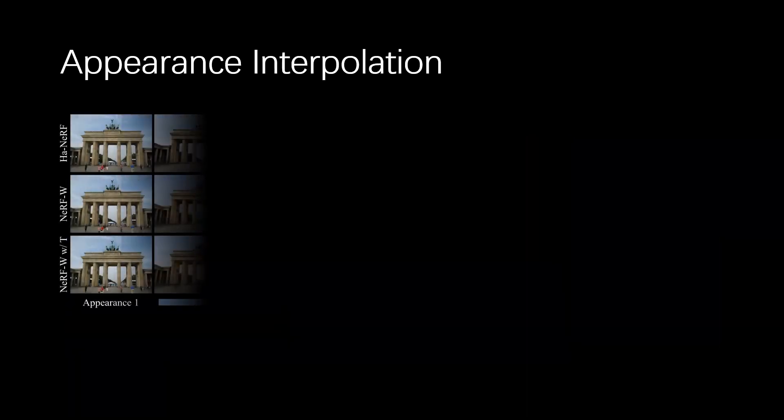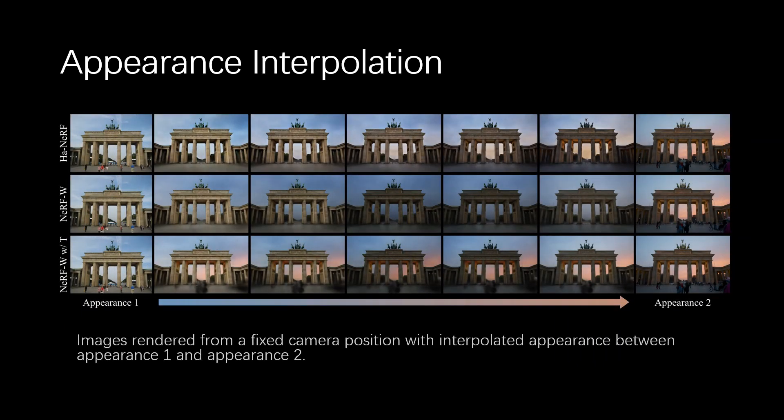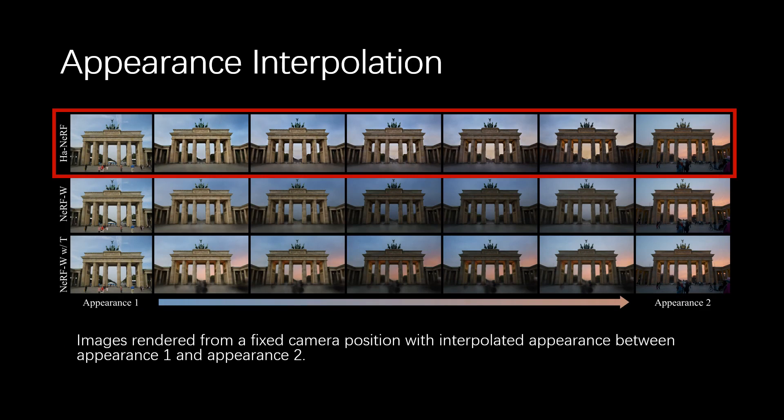We can also interpolate the appearance vectors to get other hallucinations. Here we interpolate the vectors encoded from the leftmost and rightmost images. Note that the appearance of the renderings is smoothly transitioned between the two endpoints by HA-NeRF.